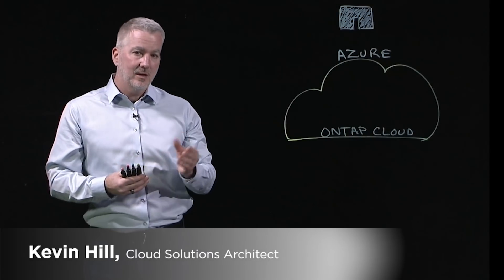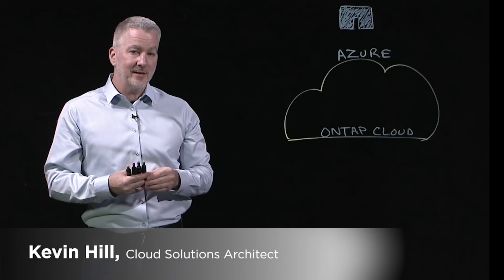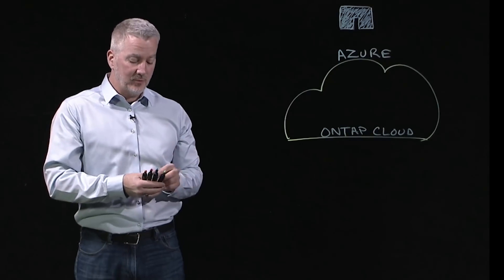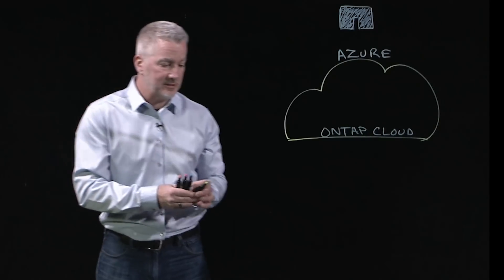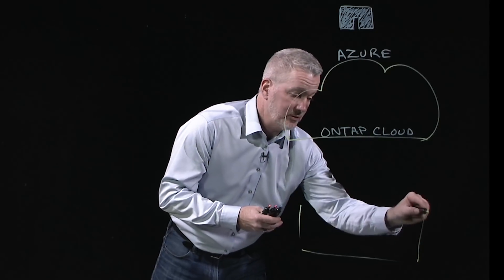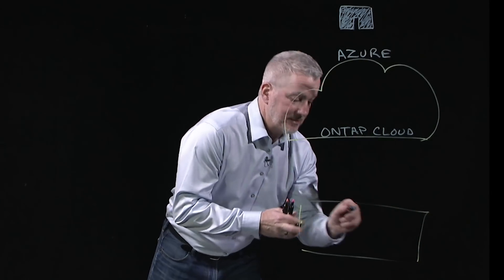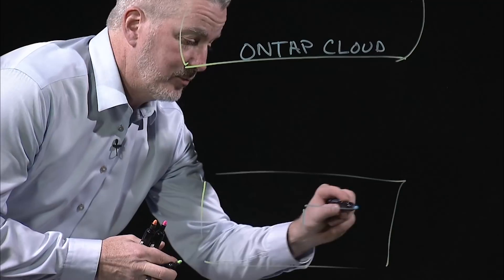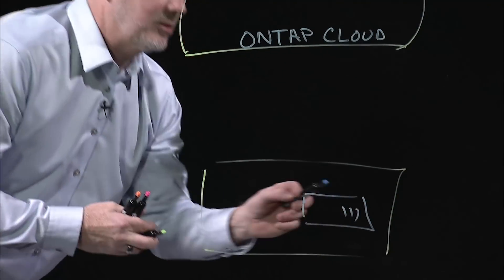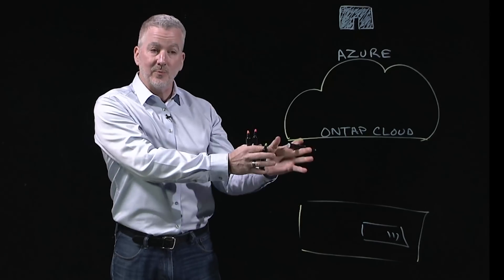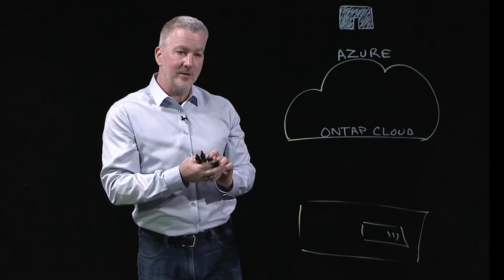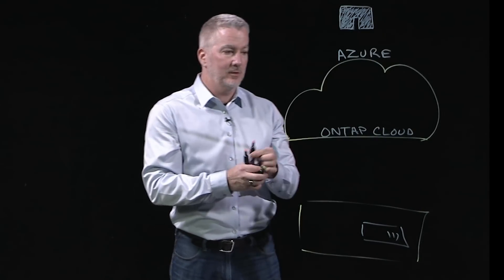What is ONTAP Cloud? ONTAP Cloud is NetApp's enterprise data management software that people have been using on-premises for over two decades, and it's now available in Azure. We've simply ported that software and made it available natively in the public cloud.